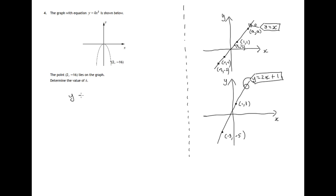So in this case, because the equation is y equals kx squared, the values x equals 2 and y equals minus 16 will satisfy that equation. This will be true for these two values because that point 2, negative 16 lies on the graph with that equation.